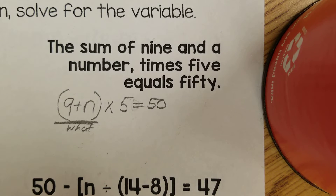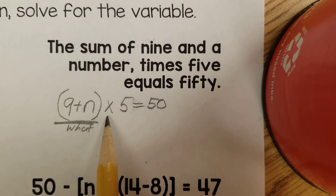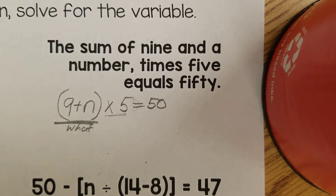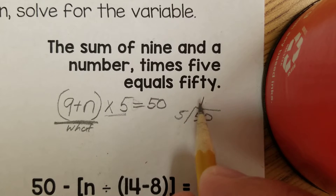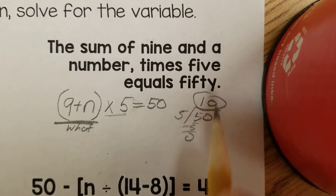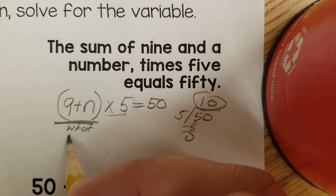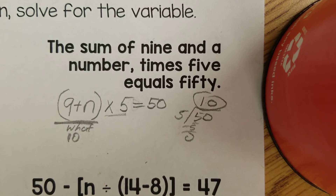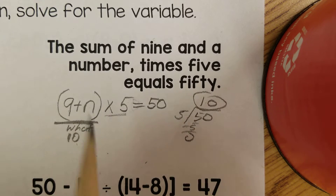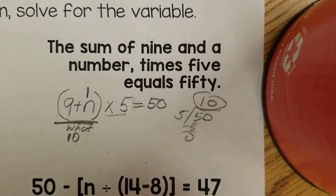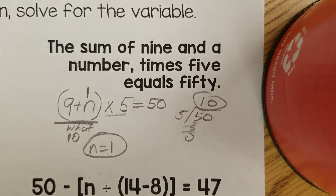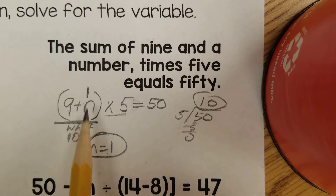Most of you know that, but in case you don't, the opposite of multiplication is division, so we can do 50 divided by 5 and get 10. So 10 times 5 equals 50. That means n plus 9 equals 10, so n equals 1. Check: 9 plus 1 is 10, and 10 times 5 is 50.